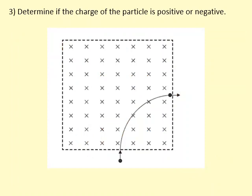Now, determine whether the charge of the particle is positive or negative. We have a charged particle going into the field, so the first finger should be pointing into the field. If the particle is moving towards the right, there must be a centripetal force pointing towards the center of the circle. Pointing the first finger into the field and the thumb towards the right, we find that the current is actually in the opposite direction to the motion. So the particle is going one way but the current is going the other way — that must mean this particle is negative, so it is a negative charge, possibly an electron.